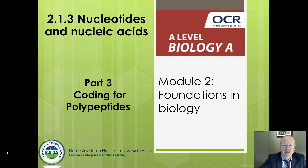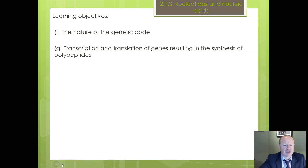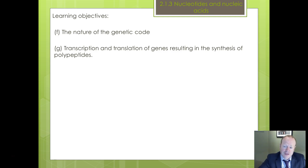Hi, welcome back to DNA from OCR Biology. This is part three, all about coding for polypeptides. We're going to review what the nature of the genetic code is, and then recap again on transcription and translation of genes. For many of you, you might have already covered this at GCSE in Triple Science, but it bears repeating — it's one of the concepts that students often find challenging, and it's a lengthy process we need to recap on.